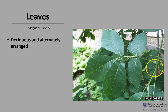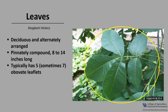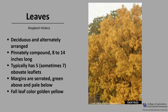The leaves of Shagbark Hickory are deciduous and alternately arranged on the stem. The leaves are pinnately compound, meaning they are made up of several leaflets, and they are between eight to 14 inches long. Shagbark Hickory typically has five but sometimes seven obovate leaflets, which means they are broader at the tip than at the base. The margins on the leaflets are serrated and they are green above and pale below.